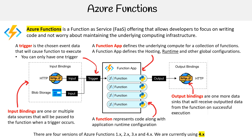Azure Functions, at least as of today, has four different versions. You really do want to just use the latest version — there could be a version five out by now. Just be aware that you're always using the latest version. In practicality, you probably won't be able to tell the difference between the versions, but just make sure you're using the latest.